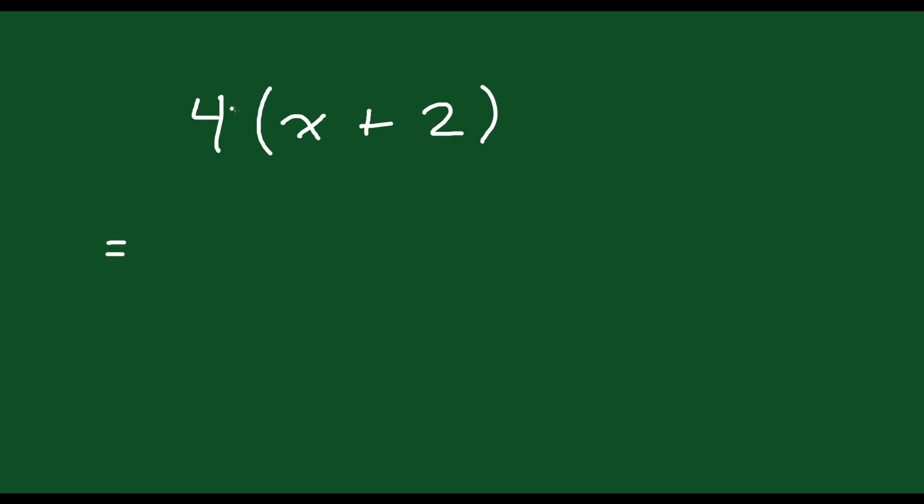Now if you wanted to distribute or multiply out this expression, what does that mean? Well, it means you're going to multiply this 4 by everything you see in the binomial. So 4 times x and 4 times 2. How do you write that out?